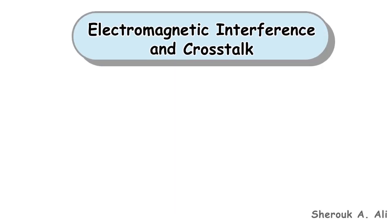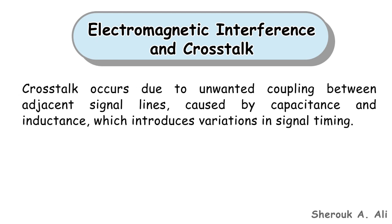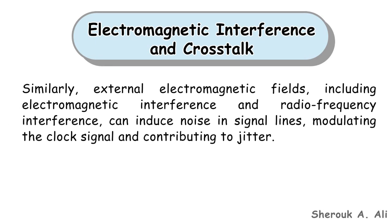Also, electromagnetic interference and crosstalk can cause clock jitter. Crosstalk occurs due to unwanted coupling between adjacent signal lines caused by capacitance and inductance, which introduces variations in signal timing. Similarly, external electromagnetic fields, including electromagnetic interference and radiofrequency interference, can induce noise in signal lines, modulating the clock signal and contributing to jitter.